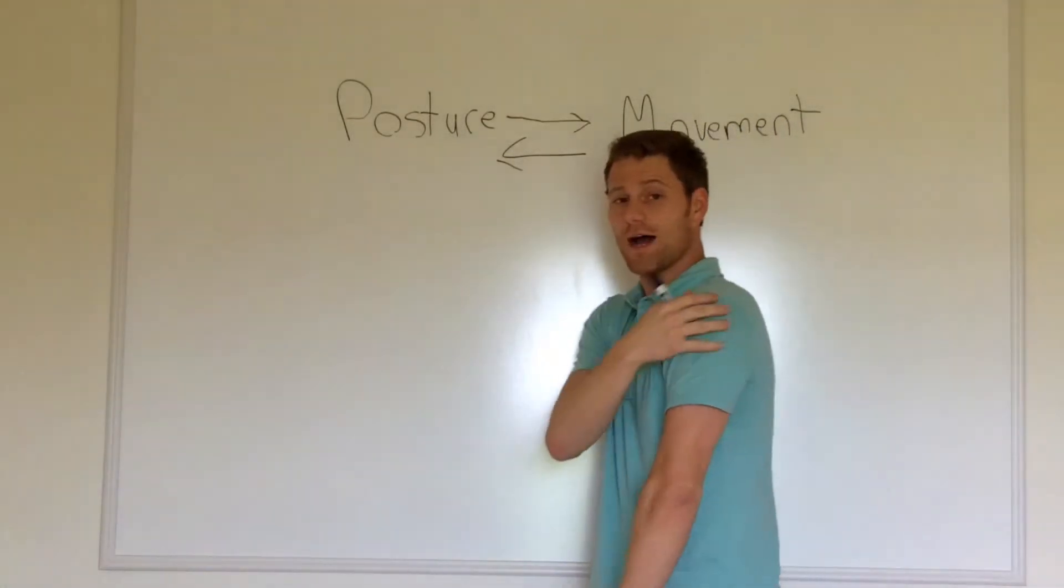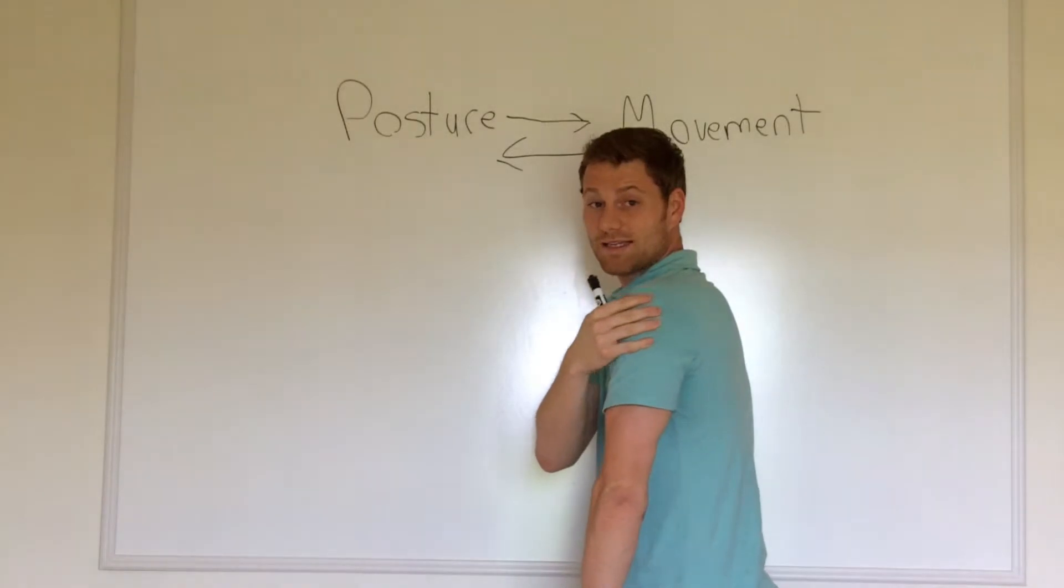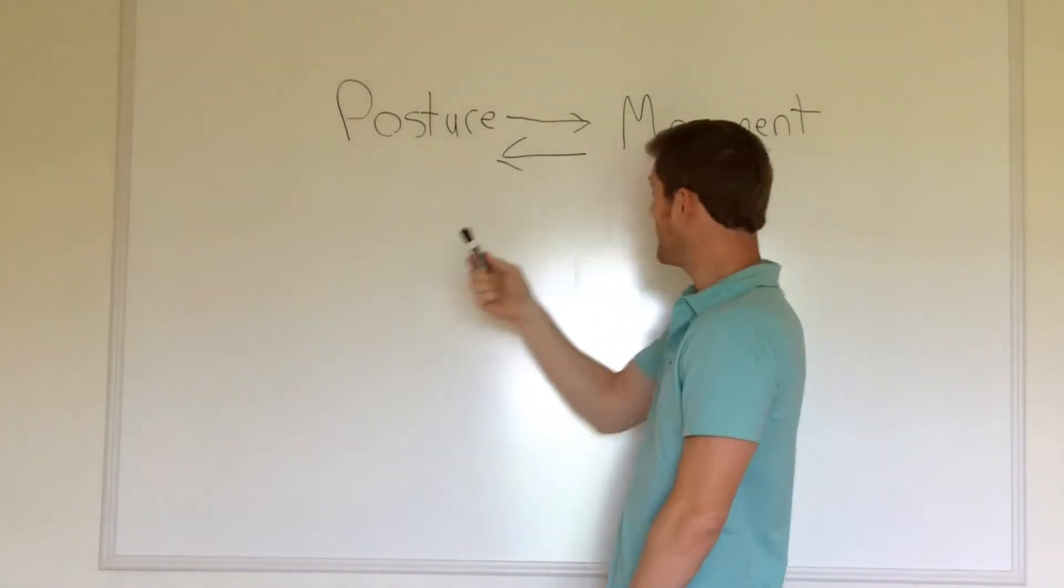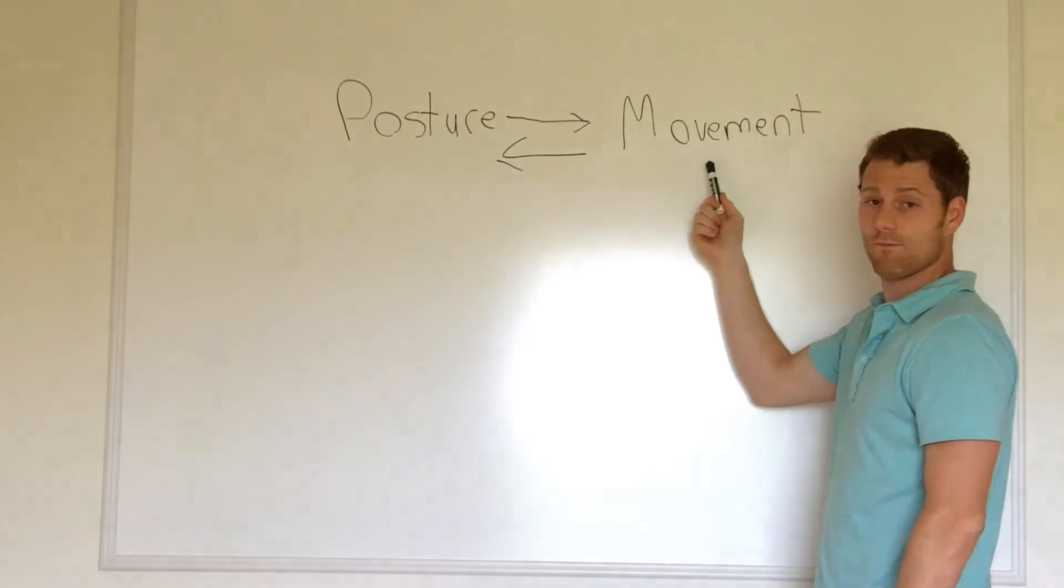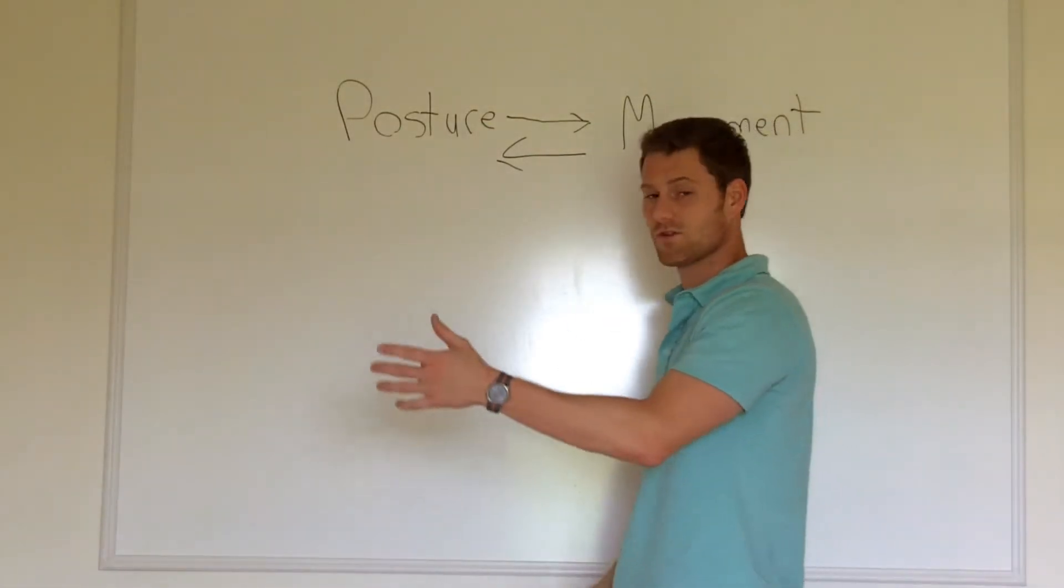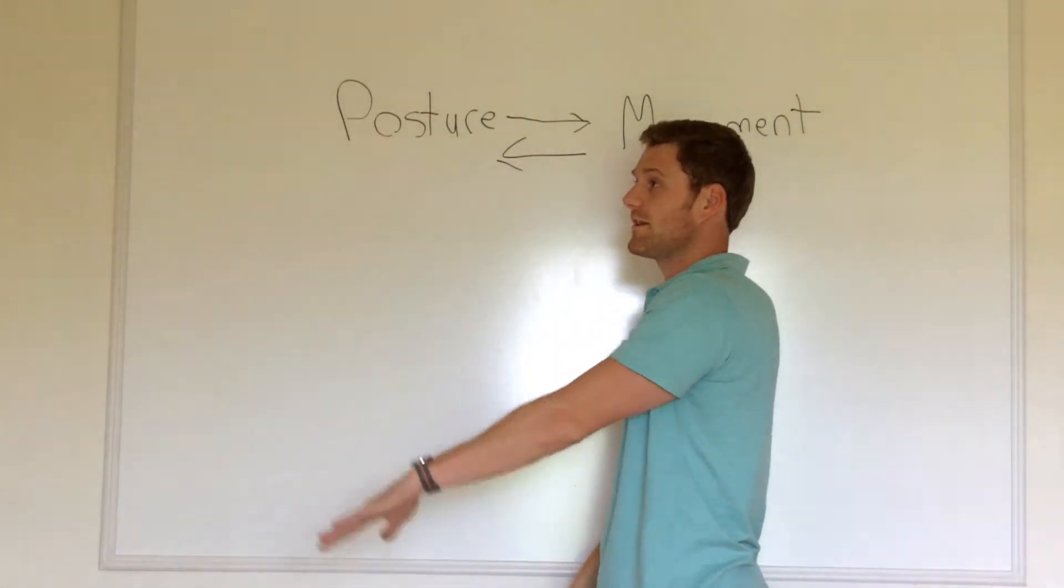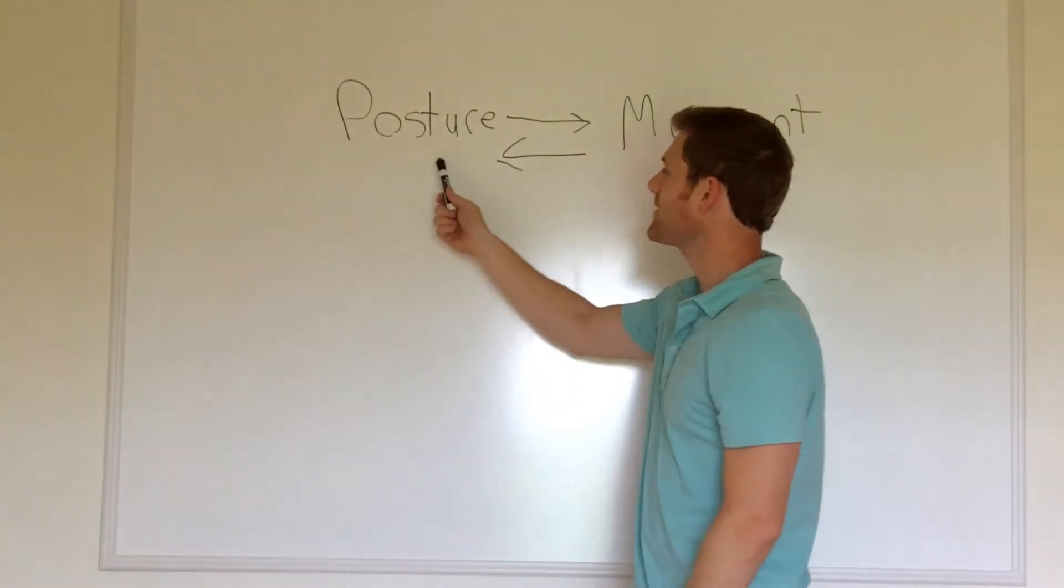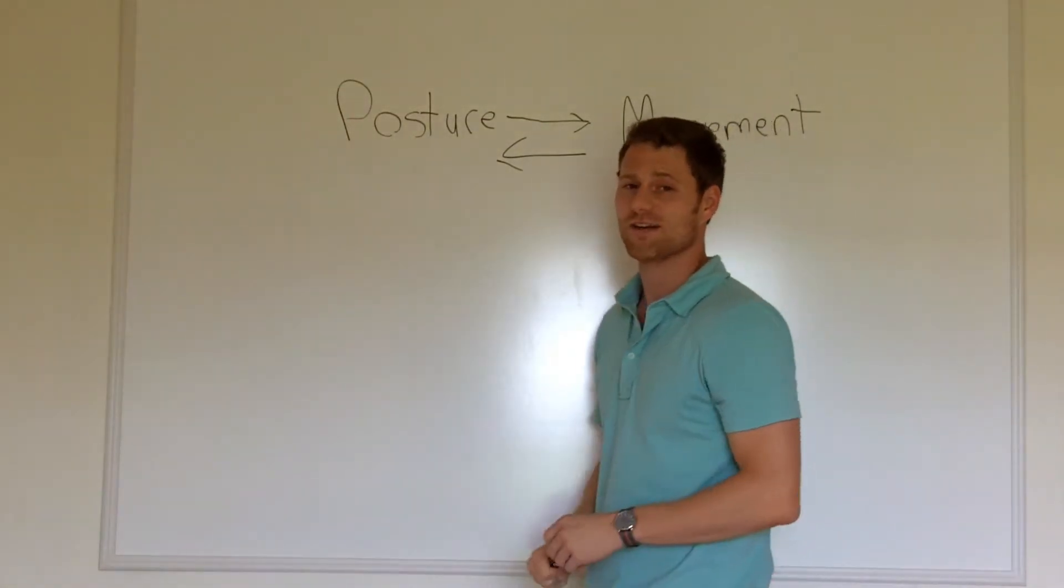Posture, physical posture, a tucked forward shoulder is a sign of poor posture and in turn that's also a sign of poor movement. The same thing holds true for the opposite. If I move poorly through this range of motion, the likelihood that I have poor posture is the same.